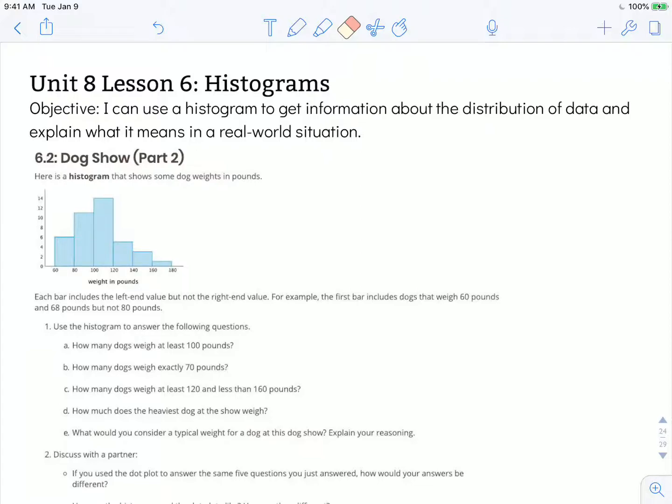So let's look at this and break it down. 6.2 dog show, part 2. Here is a histogram that shows some dog weights in pounds. Each bar includes the left end value but not the right end value. So for example the first bar includes dogs that weigh 60 pounds and 68 pounds but not 80 pounds.